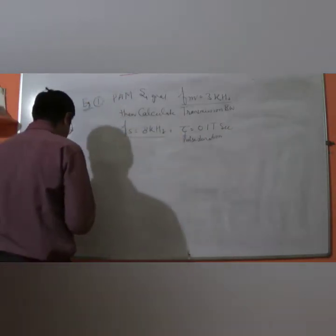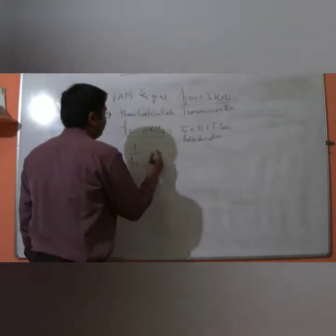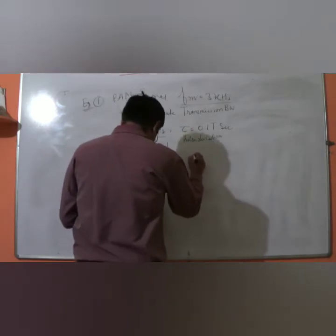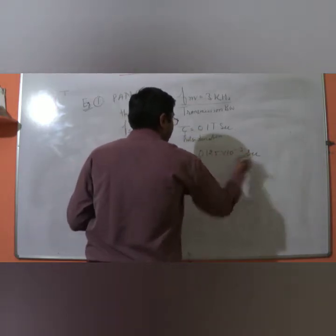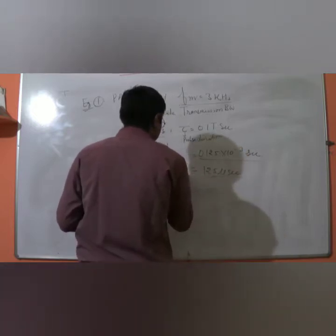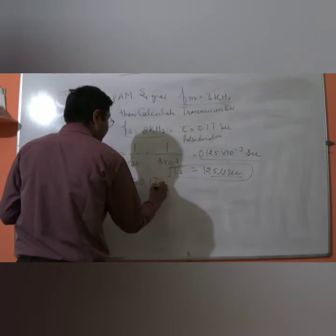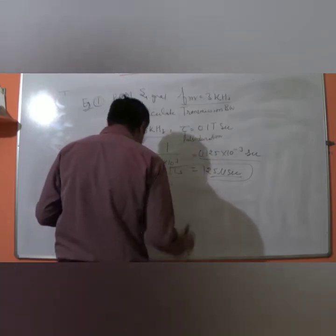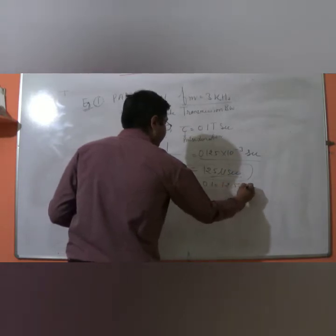We need to calculate the transmission bandwidth. As we know, Ts = 1/Fs = 1/(8×10³) = 0.125×10⁻³ seconds, which is roughly 125 microseconds. That is the sampling time. Now τ has been given as 0.1 Ts, so we calculate τ as 125 × 0.1 = 12.5 microseconds.